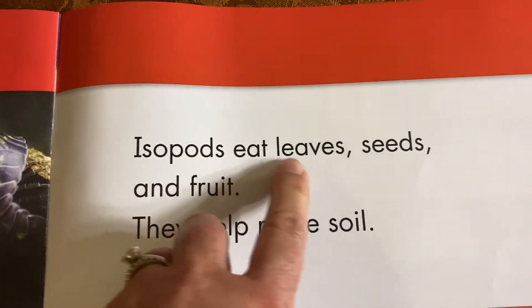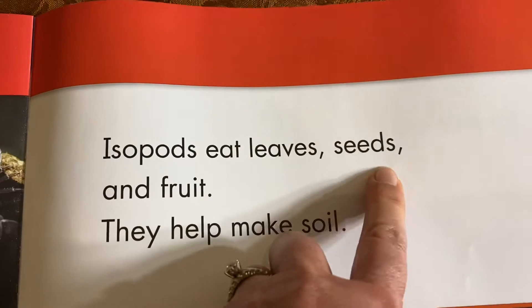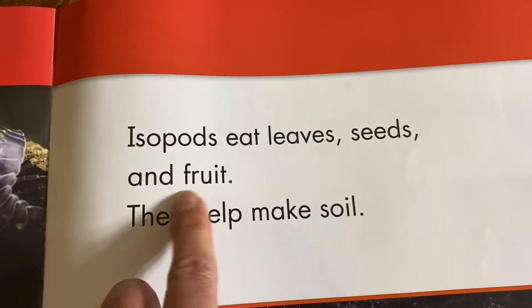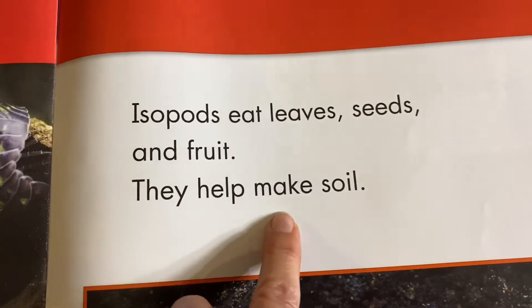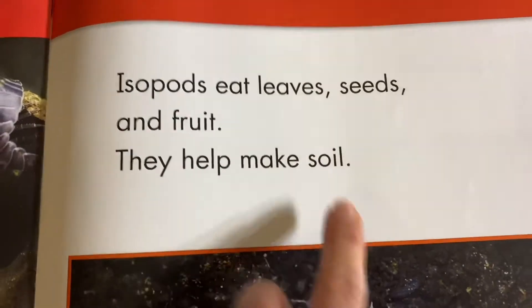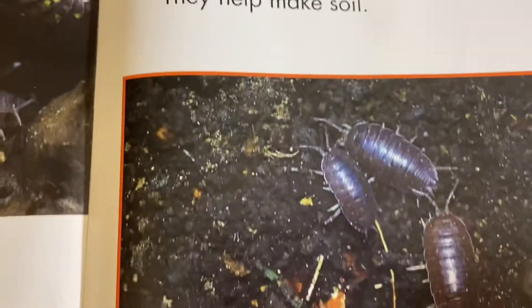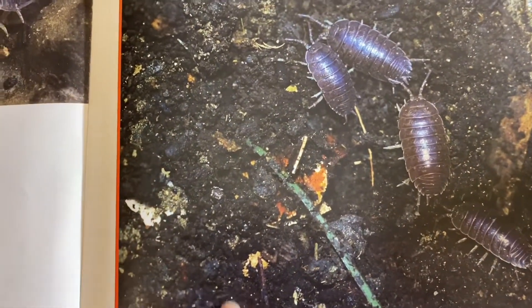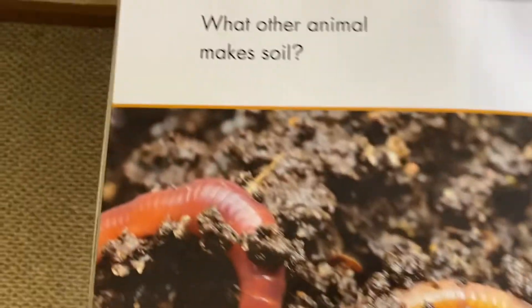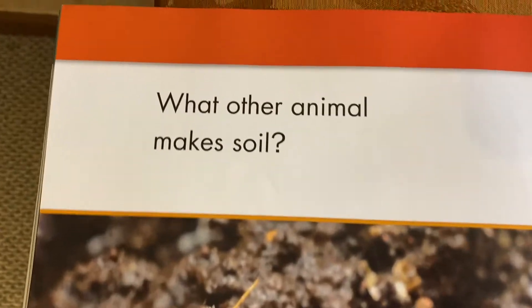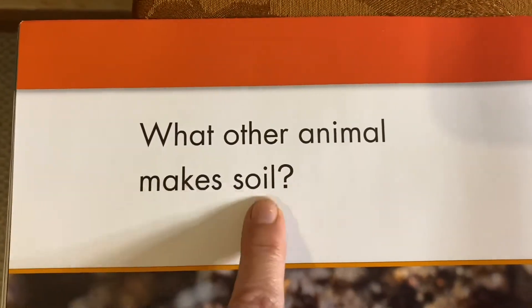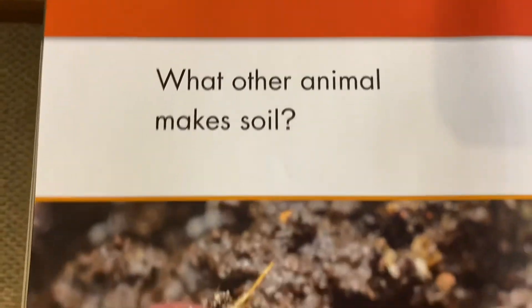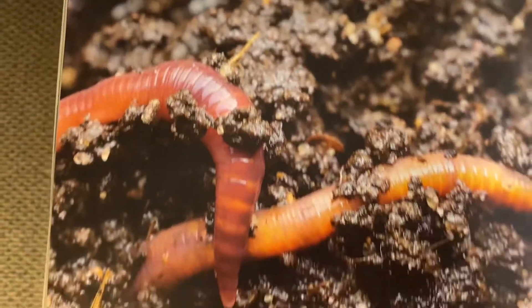Isopods eat leaves, seeds, and fruit. They help make soil. What other animal makes soil? Do you remember the worms made soil?